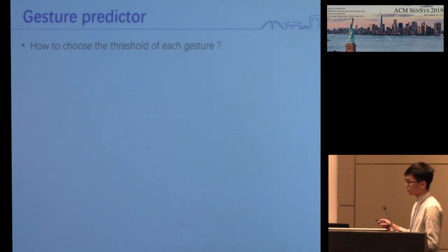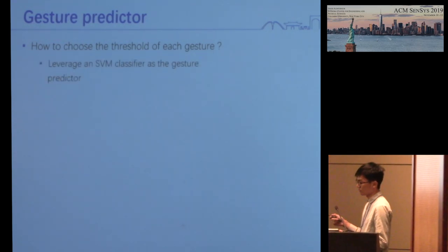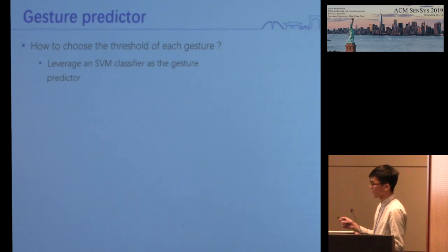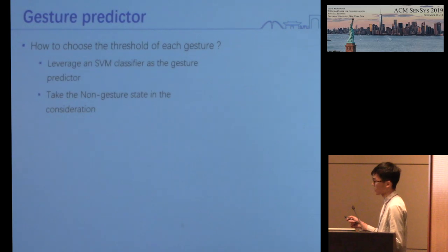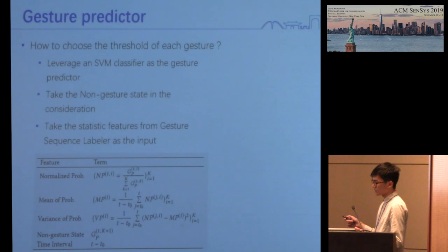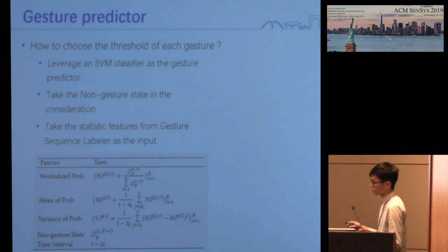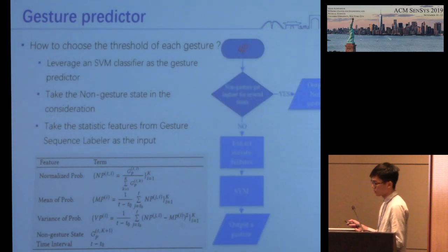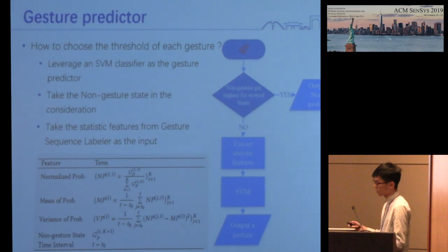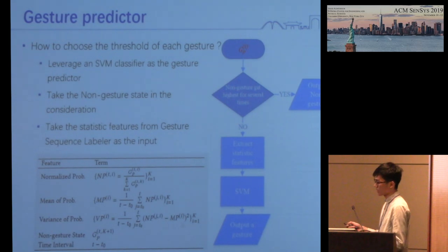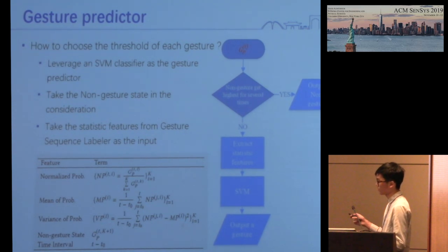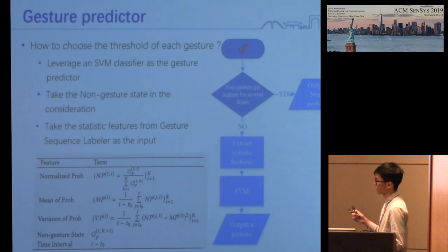Traditionally, a threshold is manually set for all gestures to make predictions. However, a single threshold may work well with some gestures but fail with others. According to this, the non-gesture state, which means unconsidered gestures or static states, is taken into consideration. We take the static speech feature from the gesture sequence labeler as input to the gesture predictor. When the probability of non-gesture state is not the highest several times in a row, the gesture predictor starts to perform gesture prediction in every time period. Conversely, when the probability of non-gesture state becomes the highest and holds at several subsequent time periods, the gesture predictor stops.